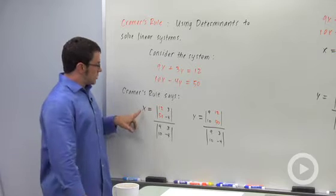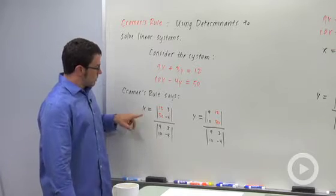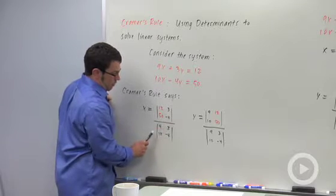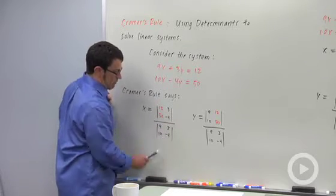Cramer's Rule says that the solution will be x equals this determinant: 12, 3, 50, negative 4 over the determinant 9, 3, 10, negative 4.